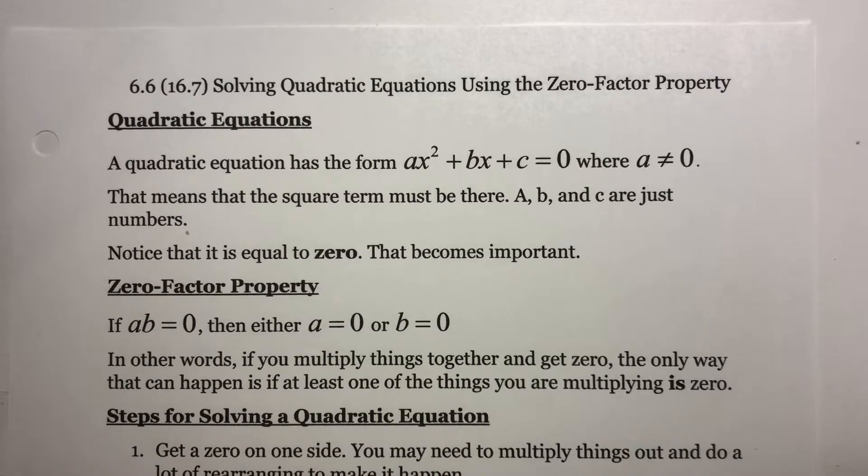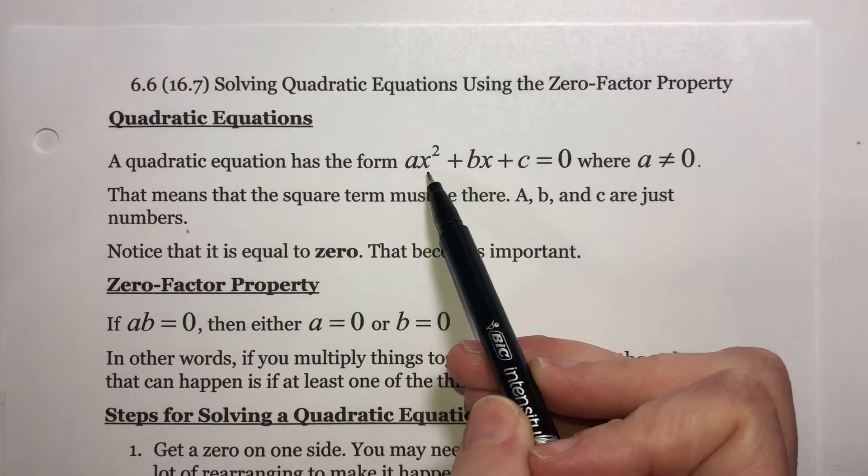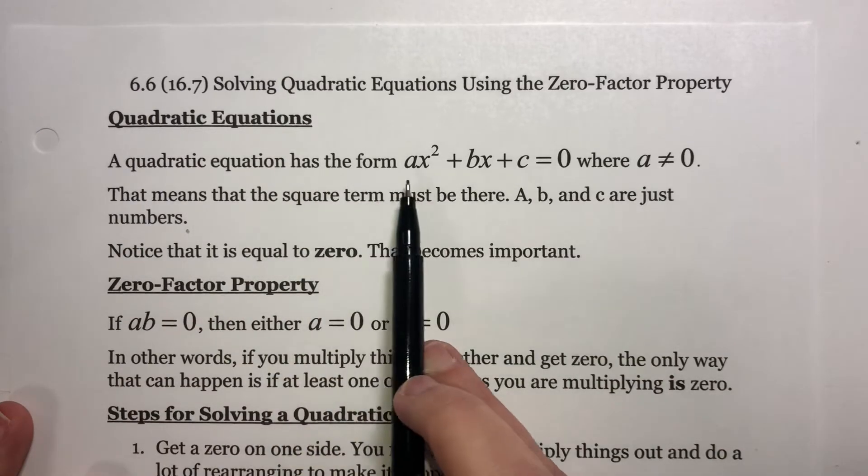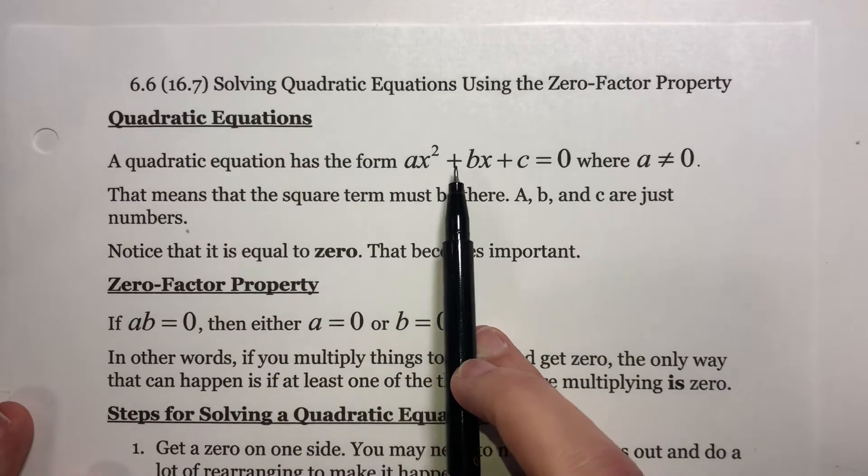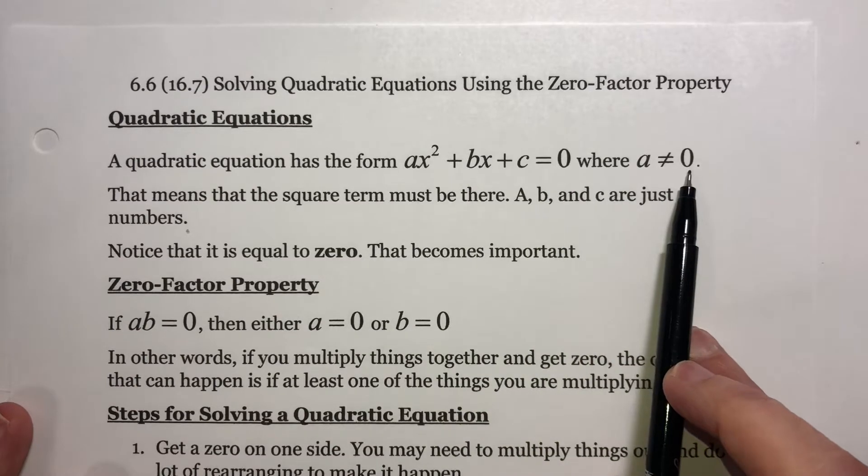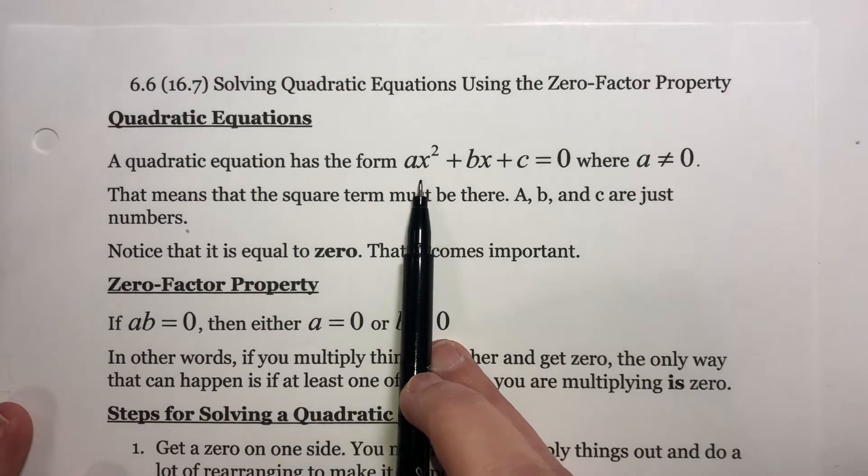Up until now, we have not worked any equation that had a square in it. A quadratic equation has the form ax² + bx + c = 0, where a ≠ 0. That means you have to have a square term in there in order for it to be a quadratic.